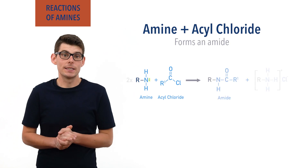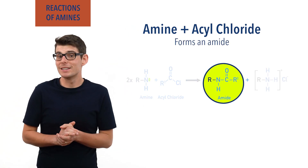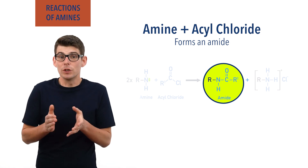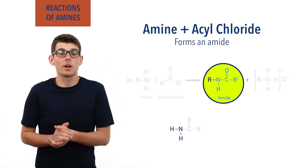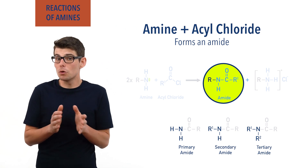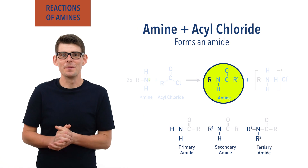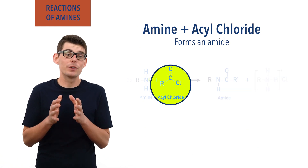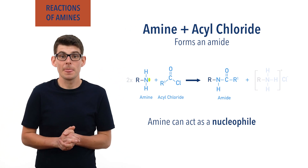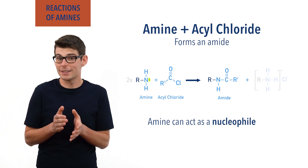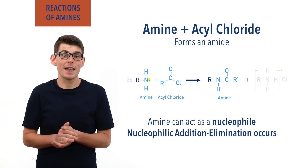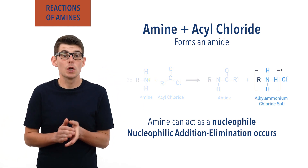Amines react with acyl chlorides to form amides. Amides are carboxylic acid derivatives that contain a carbon atom double bonded to an oxygen atom and single bonded to a nitrogen atom. The nitrogen atom can either be bonded to just hydrogen or other carbon atoms, depending on whether the amide is primary, secondary or tertiary. Acyl chlorides are highly reactive and the nitrogen atom in an amine is able to act as a nucleophile, again because of that lone pair of electrons. When an acyl chloride and amine are reacted together, a nucleophilic addition-elimination reaction occurs, with a secondary or tertiary amide as the product, and an alkyl ammonium chloride salt also gets produced.